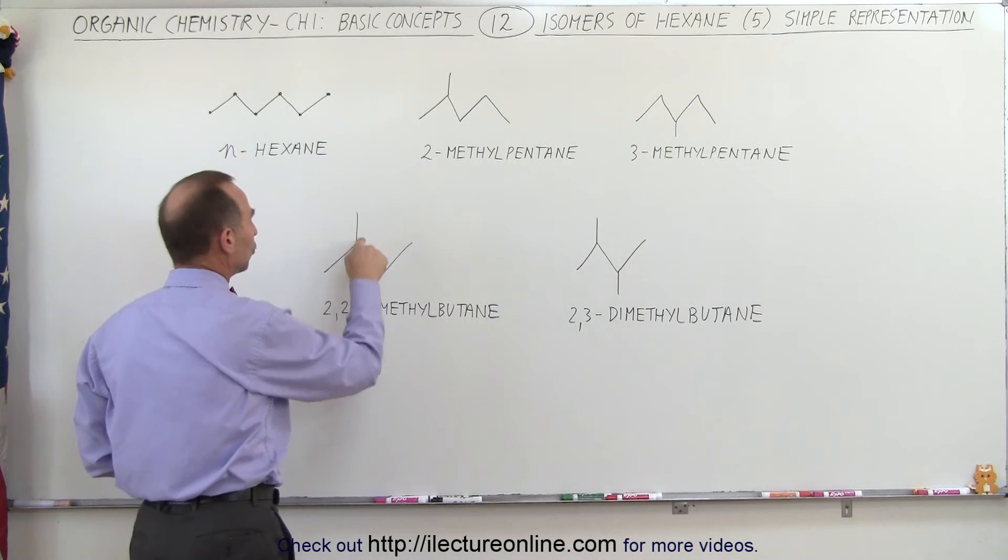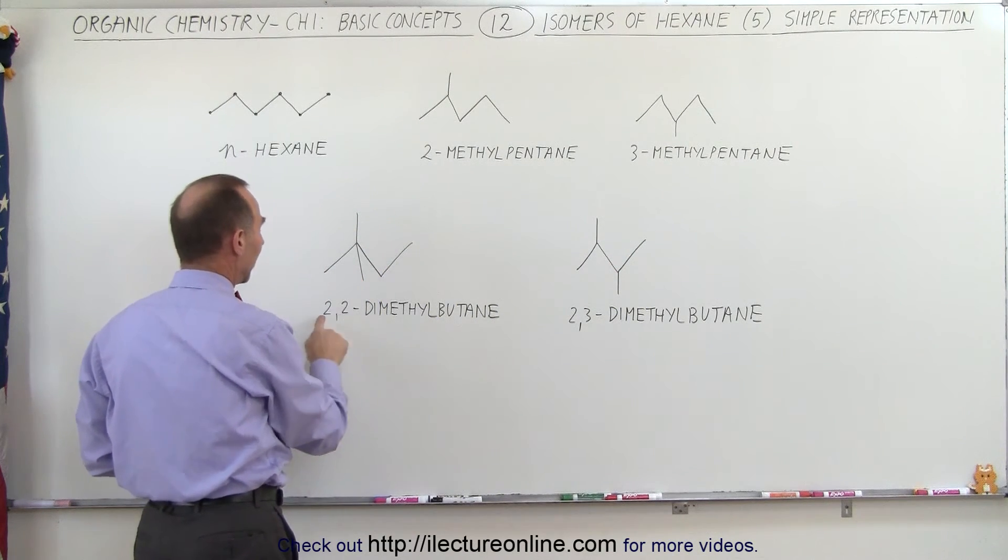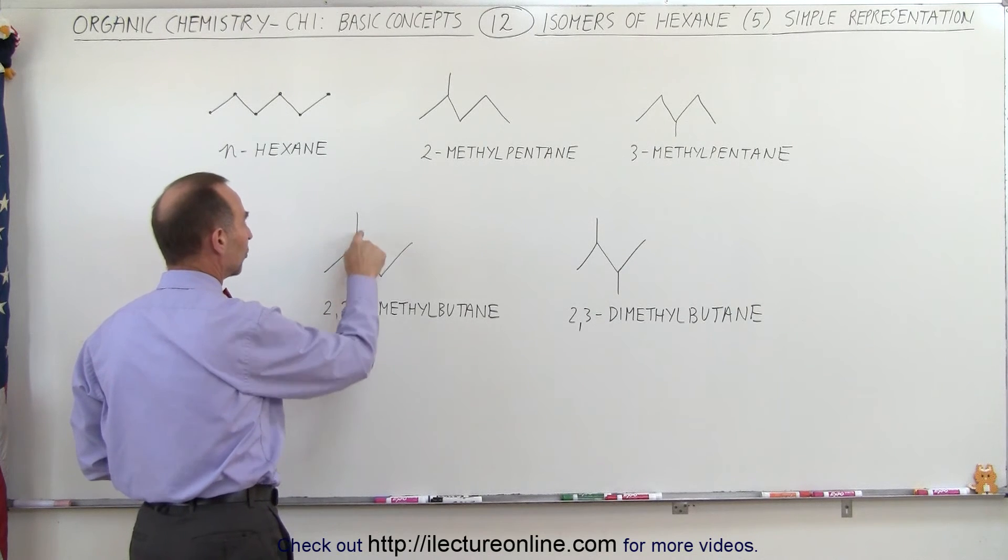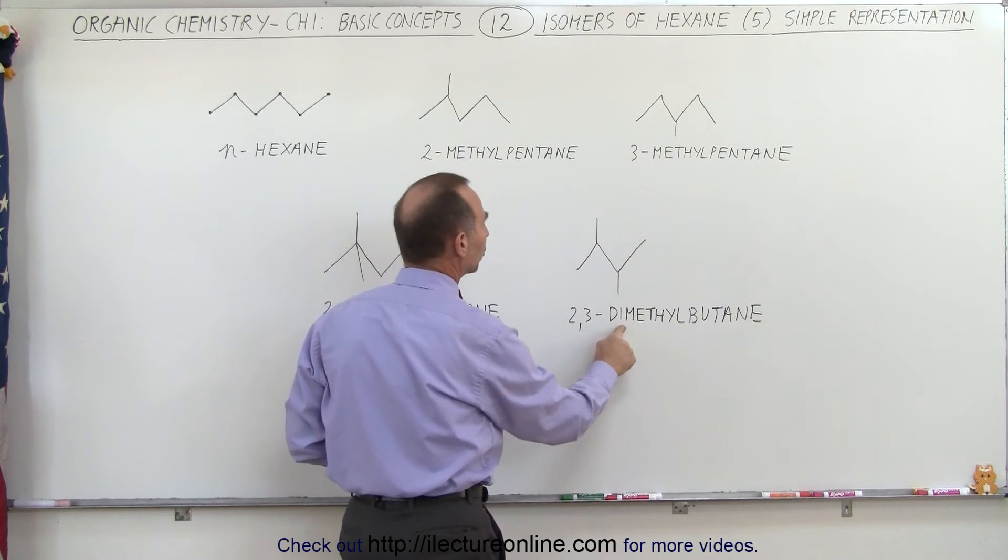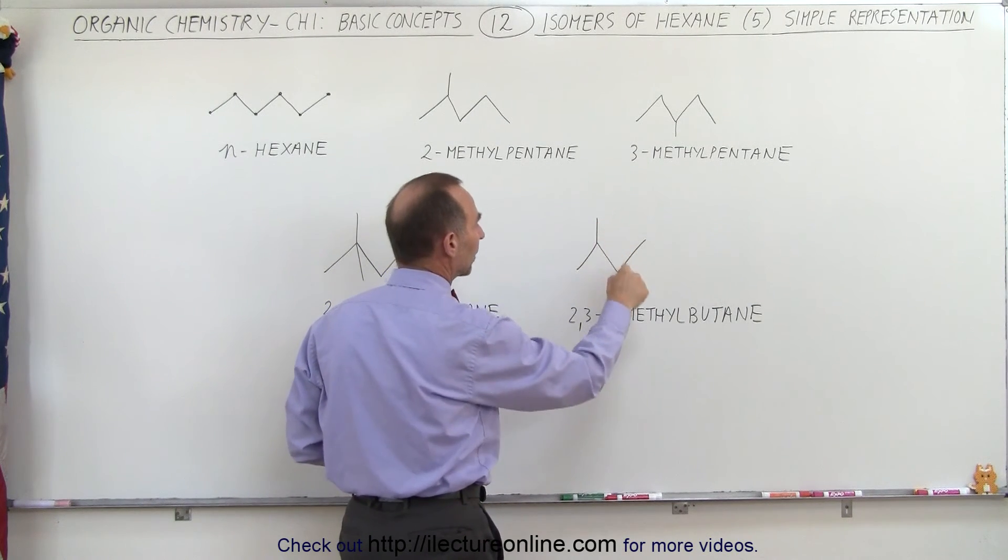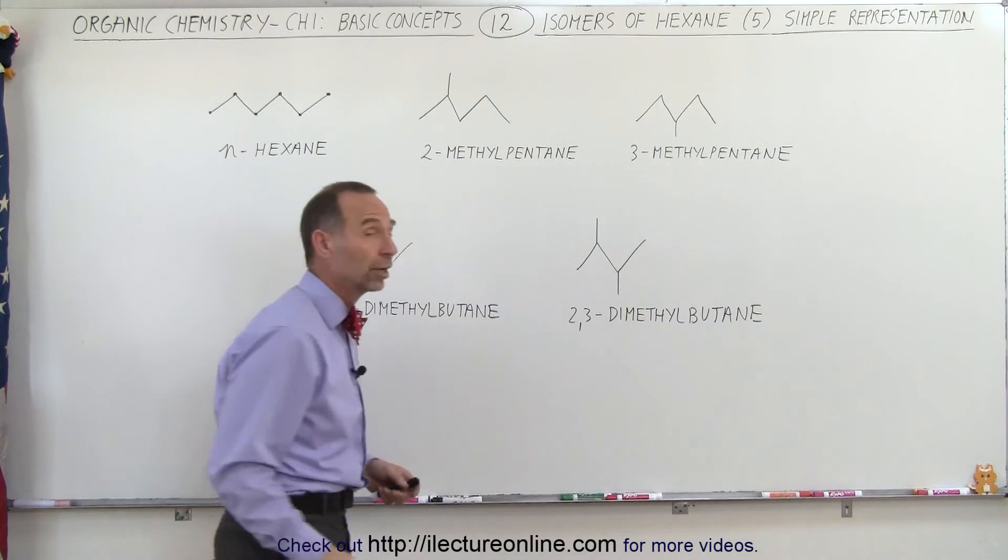We have two methyl groups, therefore the dimethyl, and both connected to the second carbon. So 2,2 is the two methyl groups connected to the second carbon. And 2,3 are the two methyl groups, one connected to the second carbon and one connected to the third carbon.